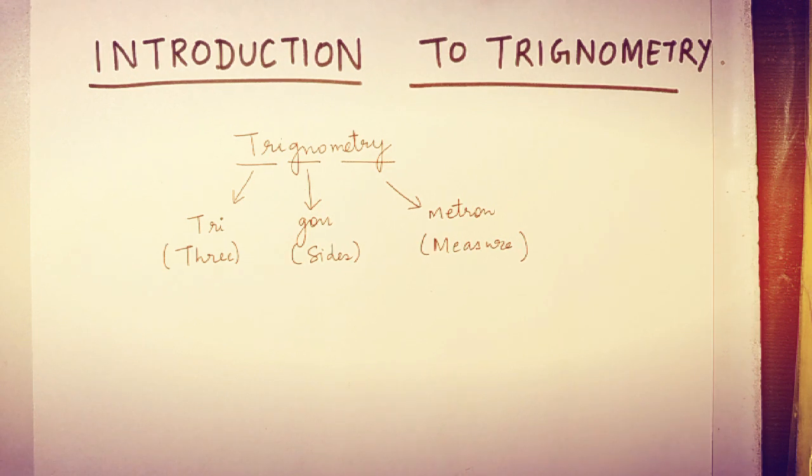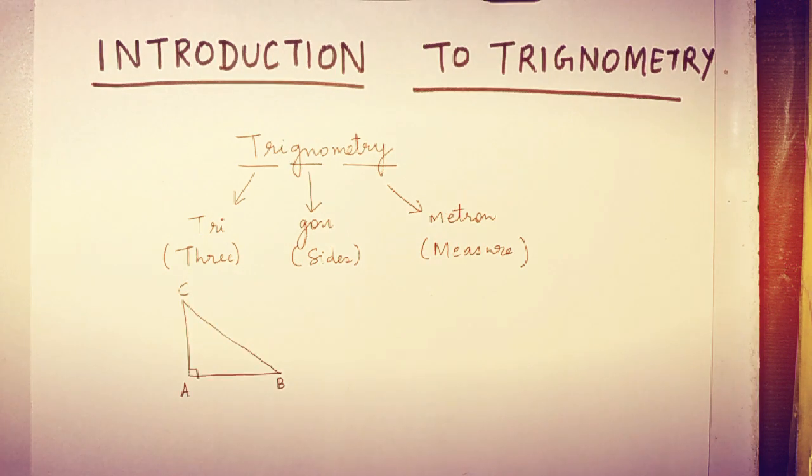And to be more specific, we will be dealing with right triangles. And which are right triangles? In which one of the angles is right, that is 90 degrees. Now in this triangle, angle A is 90 degrees, so this is a right triangle.